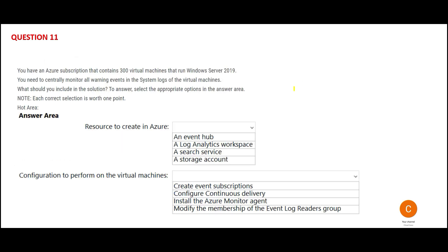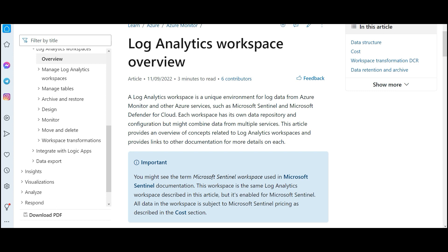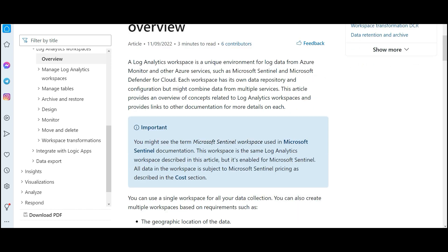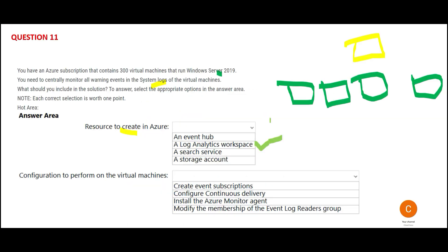Now let us look at the next question. You have a subscription with 300 virtual machines, all running Windows Server. You want to centrally manage the warning events in the system logs of those virtual machines. Log Analytics Workspace is designed to store log data from Azure Monitor and other Azure services, including VMs. It is the mechanism to maintain that data centrally — each workspace has its own data repository. You can use a single workspace with data collection from multiple services. So Log Analytics Workspace is my answer.